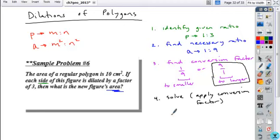So we're going to take our original starting point, 10 centimeters squared, and we're going to multiply by our conversion factor, nine over one. That's the ratio of their areas. And then we just simplify across the top, 90 centimeters squared over one, and we get our answer.